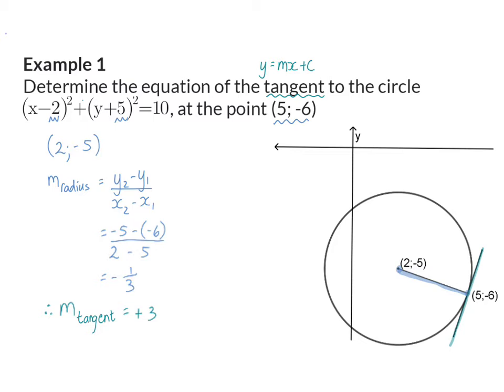This means that I now have part of my equation for my tangent and that is the m as three, so it will be y = 3x + c and now I need to calculate the value of c.